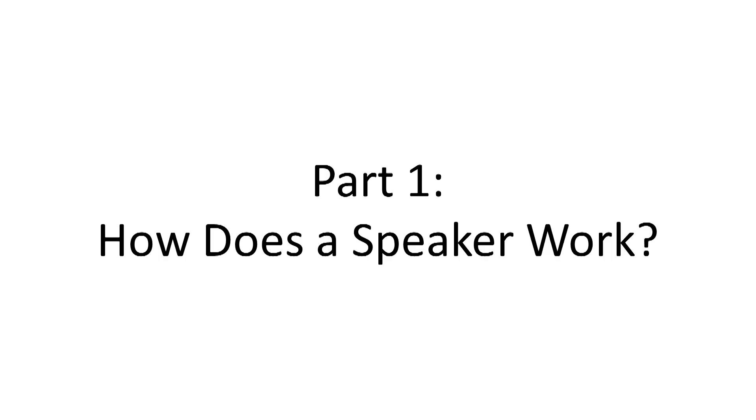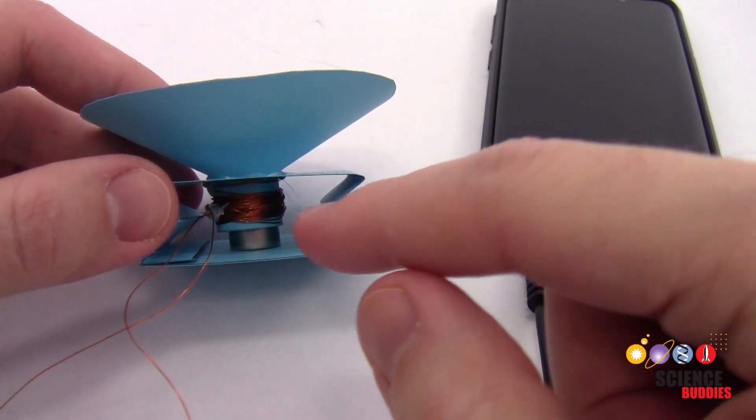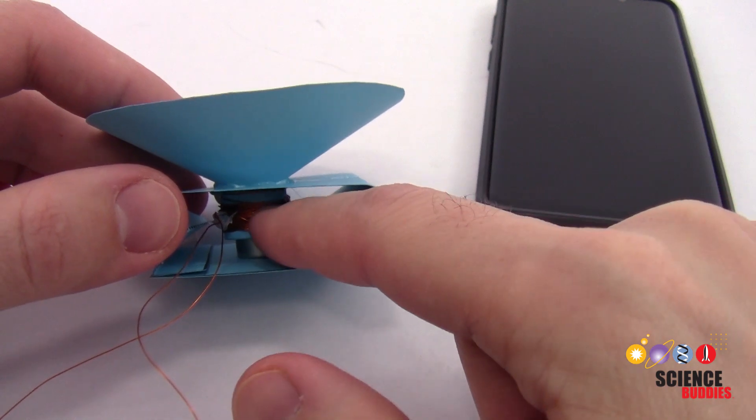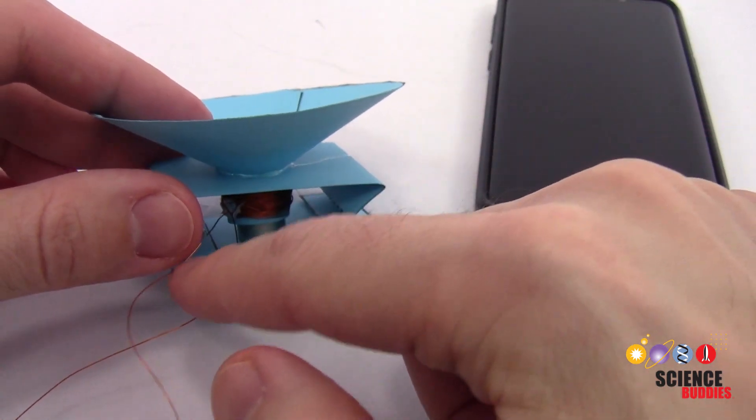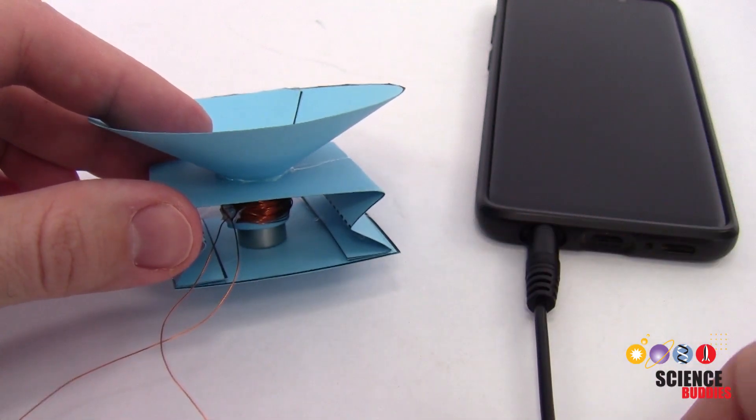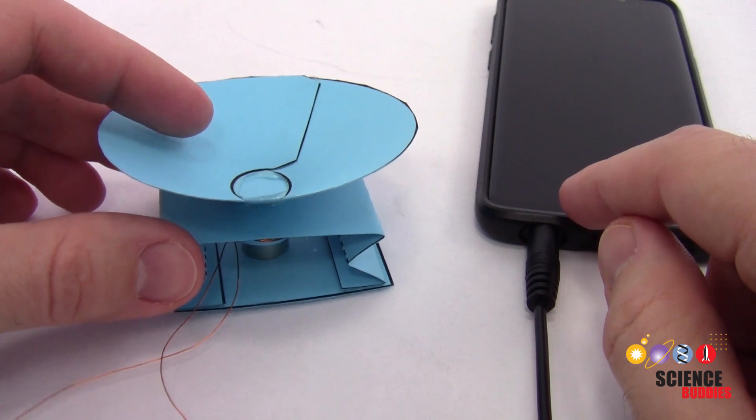Before we dive into building the speaker, let's briefly talk about how a basic speaker works. Your speaker has a few main parts. If we turn the speaker sideways and look inside, we see a coil of wire that is wrapped around a magnet, and that coil of wire is connected to a headphone cable that plugs into a device like a computer or phone that can play music.